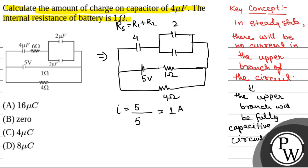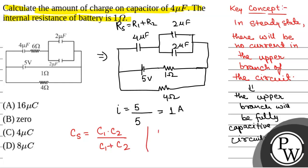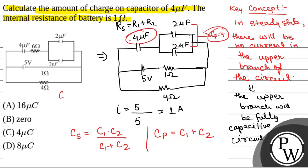Now we will calculate the net capacitance of the upper branch. When two capacitors are connected in series, the series capacitance is given by C1 times C2 divided by C1 plus C2. When two capacitors are in parallel, the equivalent capacitance is C1 plus C2. The two parallel capacitors give a combined capacitance Cp equal to 4 microfarad. This 4 microfarad and the other 4 microfarad are connected in series, so C equivalent equals 4 times 4 divided by 4 plus 4, which is 16 by 8, that is 2 microfarad.